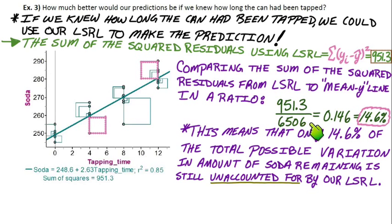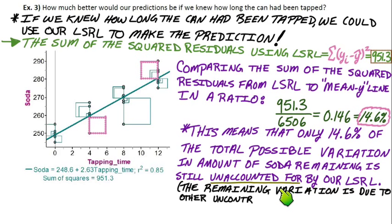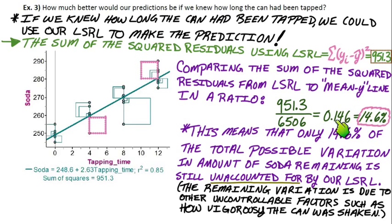The mean represents all the possible variation that exists. In comparison, we're only at 14.6% of that. If 14.6% is still unaccounted for, the remaining variation is due to other uncontrollable things — like how vigorously the can was shaken, or that each person taps a little differently and some tap harder than others. So there are a couple of other uncontrollable factors that create some variation. This is not a perfect linear fit.